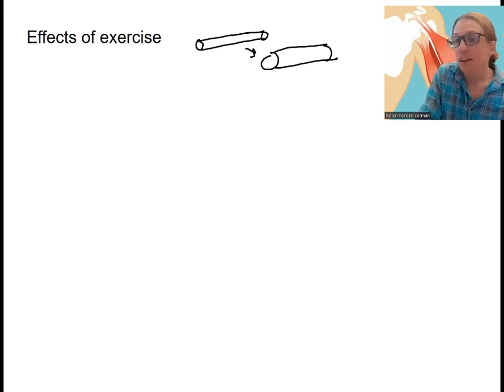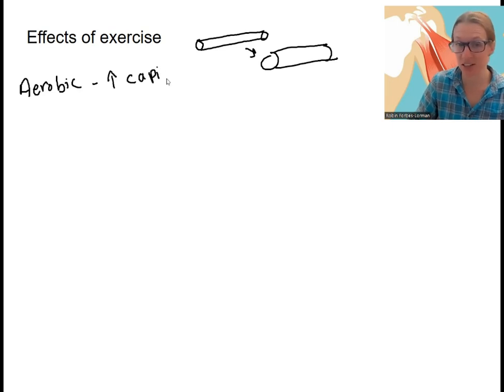And then this depends on what type of exercise you're doing. So with aerobic exercise, you probably could think about what you think would happen. You'd have increased capillaries going to your muscles because that blood is needed, that blood that contains oxygen and removes carbon dioxide.